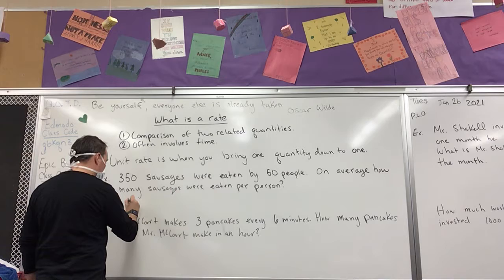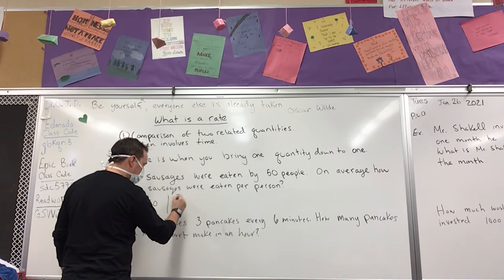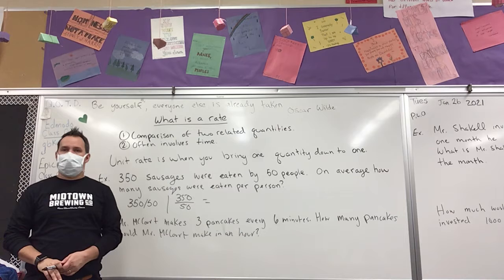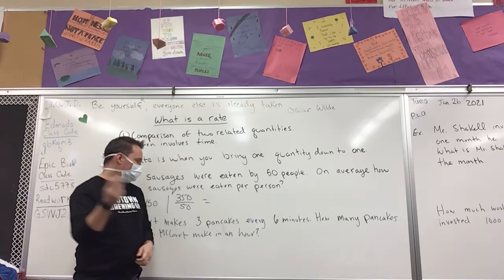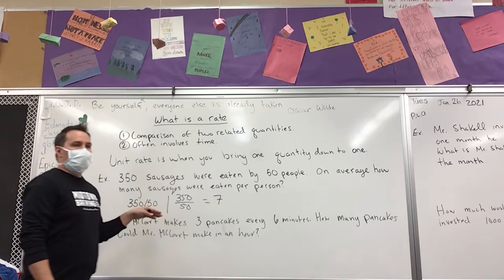So we can figure it out by taking our sausage number, 350, divide it by 50. Or if we were writing this as a fraction, we could say 350 divided by 50. What does that equal? What is 350 divided by 50? How many 50s does it take to get to 350? Seven. So if we take our total number of sausages and divide it by the number of people there, we're going to get seven.